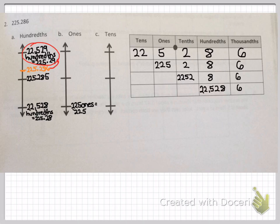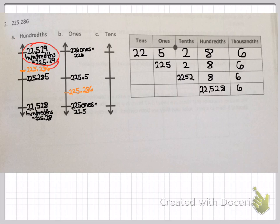Now moving on to ones. In the ones spot you have 225 ones, which is the same as saying 225. At the top you have 226 ones, or 226. The midpoint is 225 and 5 tenths. Placing our number on the number line, it fits right in between the midpoint and the point at the bottom, so you'll be rounding to 225.